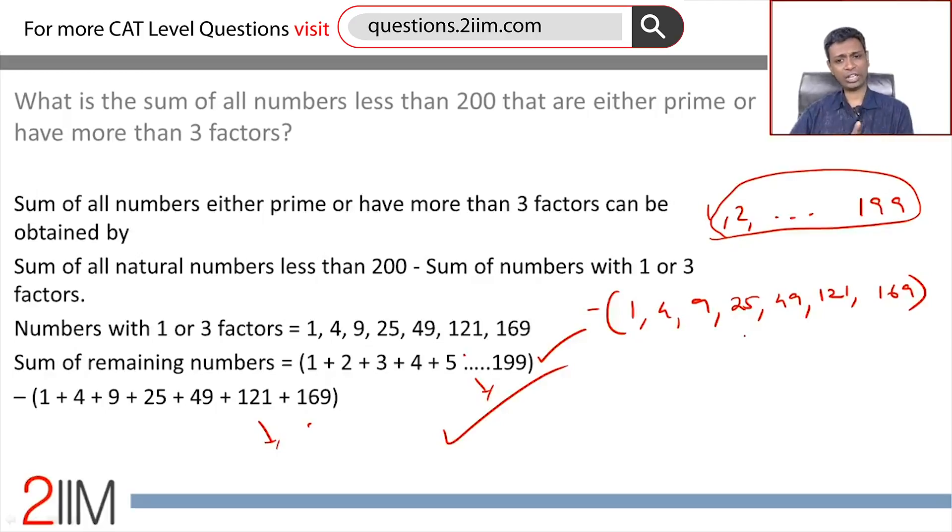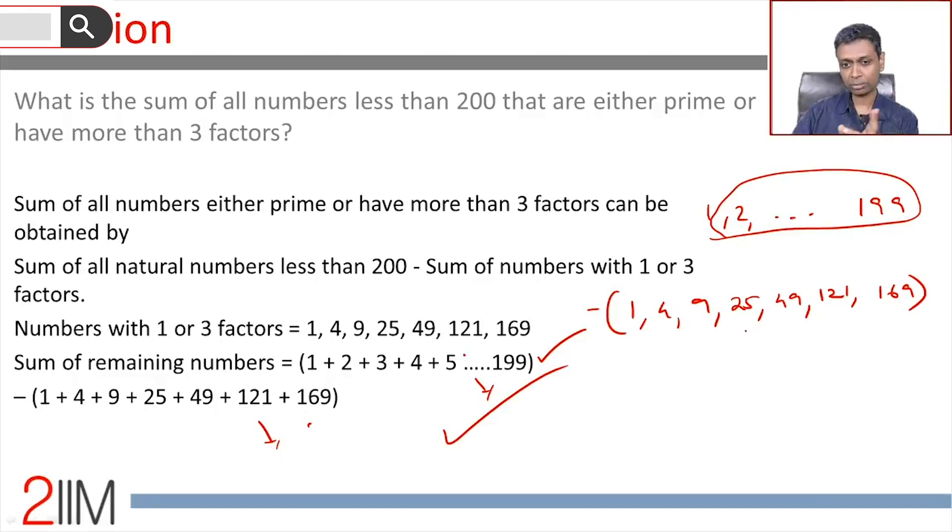Wonderful question. A bunch of fun ideas here. First up, number 1 has only one factor. If a number has two factors only, then it is a prime number. If a number has exactly three factors, then it is square of a prime. We're trying to remove all numbers that are squares of prime, and then we're removing 1 from the list of natural numbers from 1 to 199.